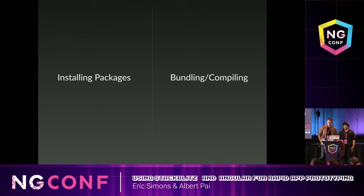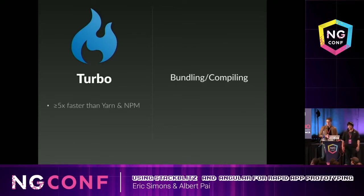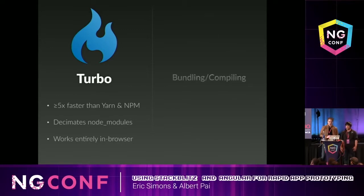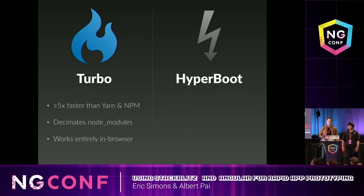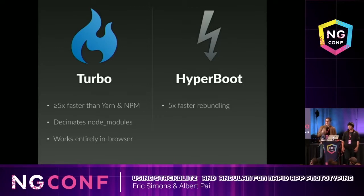So these are the two areas in the developer experience that were really a huge buzzkill. We came up with two pieces of technology that solve it. The first is an npm client that works entirely within your browser and we call it Turbo. Turbo operates at least five times faster on average than npm and yarn, because it's super smart — it only installs the stuff your application needs, not the entire tarball. On the bundler and dev server side, we created Hyperboot, which allows you to do super fast rebundling — about five times faster than Browserify and other tools out there, largely because it's all in memory.